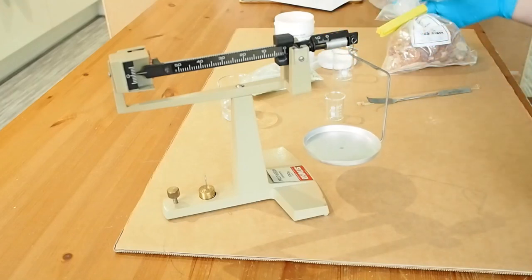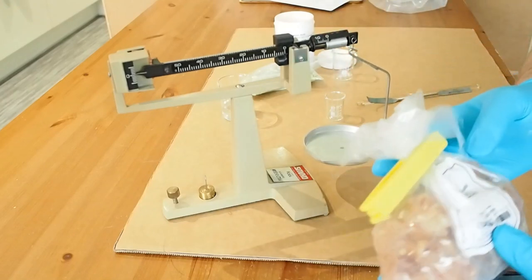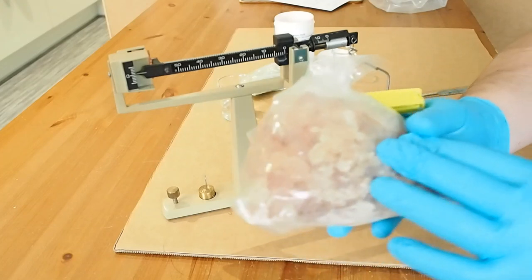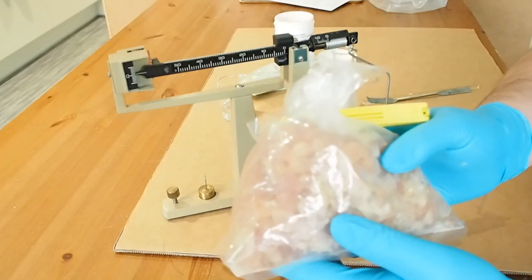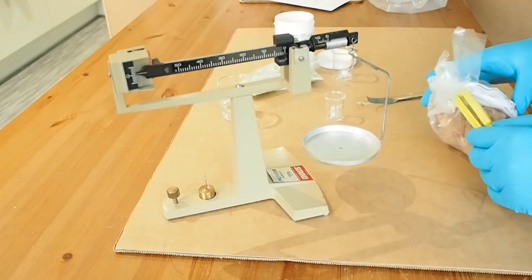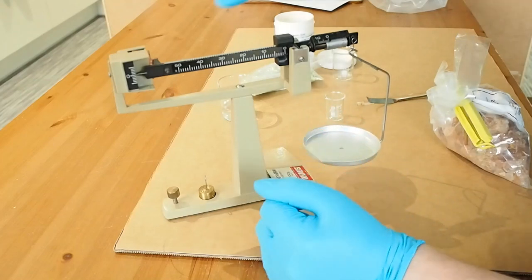But first, we're going to put some of this in. This is called gum arabic. It's used to make gummy sweets and it's used as a thickener in lots of things as well. What I need to do is set my balance for 0.8 grams.